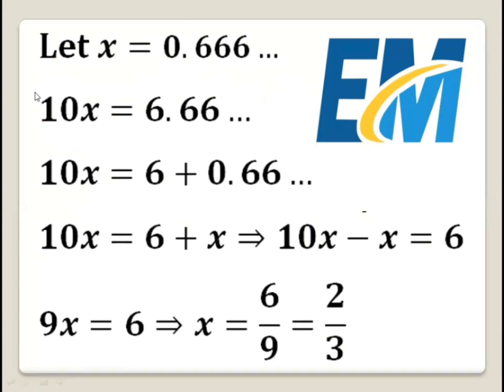Now we multiply the number by 10. Then 10x will be 6.66 repeating. We can write this as the integer part, which is 6, plus the fractional part, which is 0.66 repeating. But this fractional part is also x. So we have 10x equals 6 plus x.